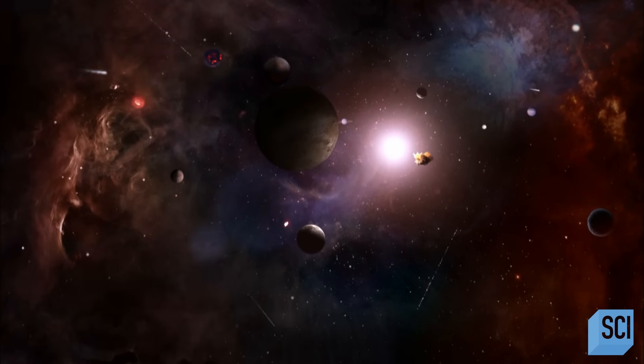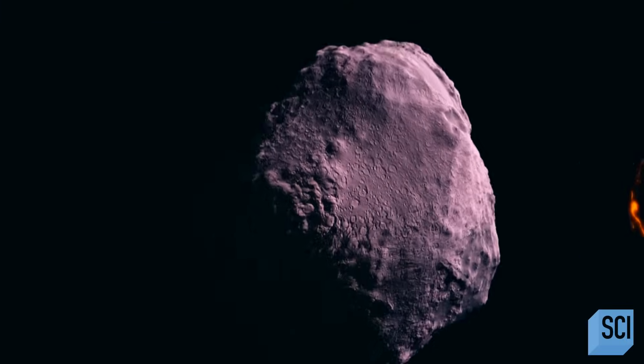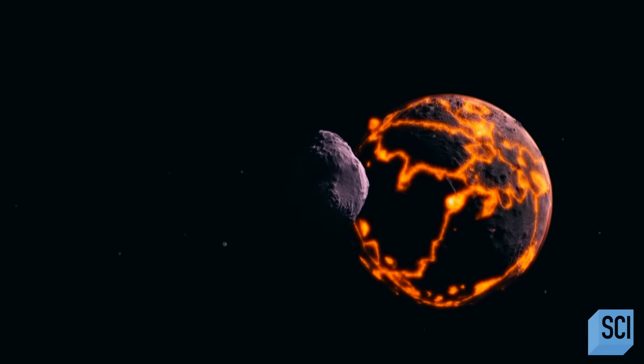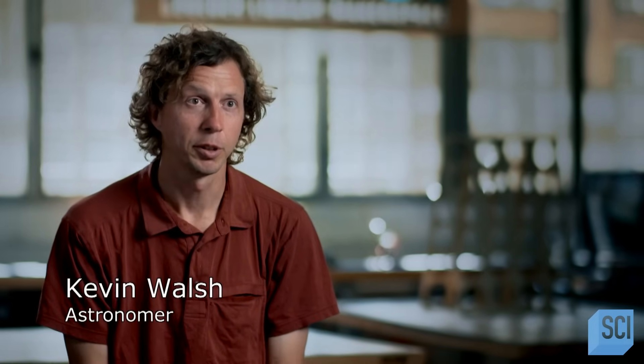Out of this chaos, planets formed, including the Earth. But the violence wasn't over. As the Earth is forming, it's still being bombarded by all the leftover debris in the solar system. And so it's constantly being impacted.